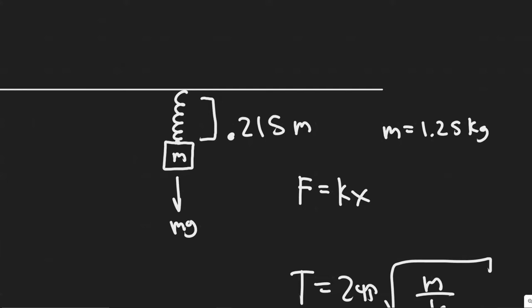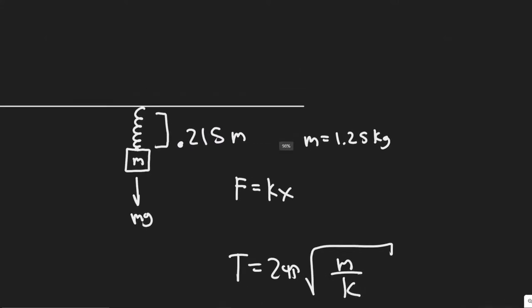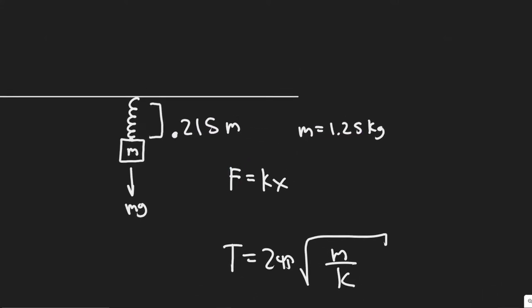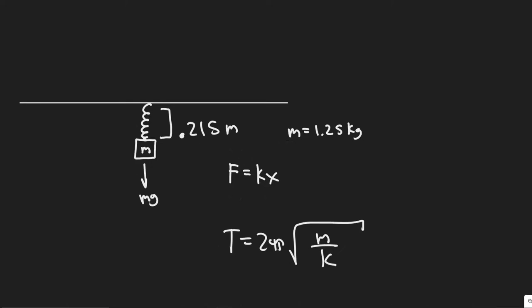And then what we're going to do is stretch the spring an additional 0.130 meters, release it, and then we want to find out how much time it takes to reach the equilibrium position again, which is where it is at now. So we're given the mass of the block, and let's talk about how we're going to solve for this.